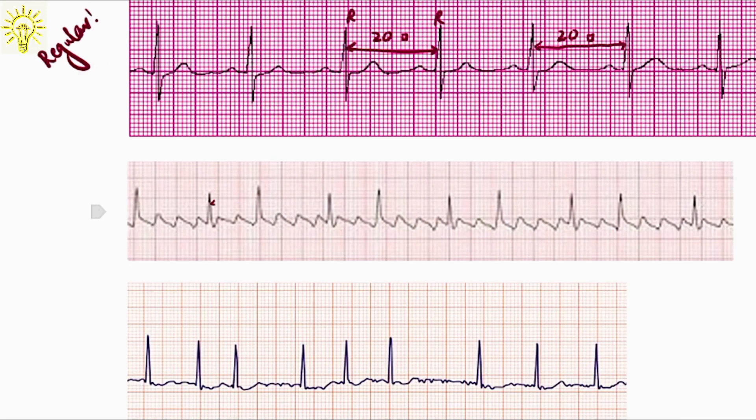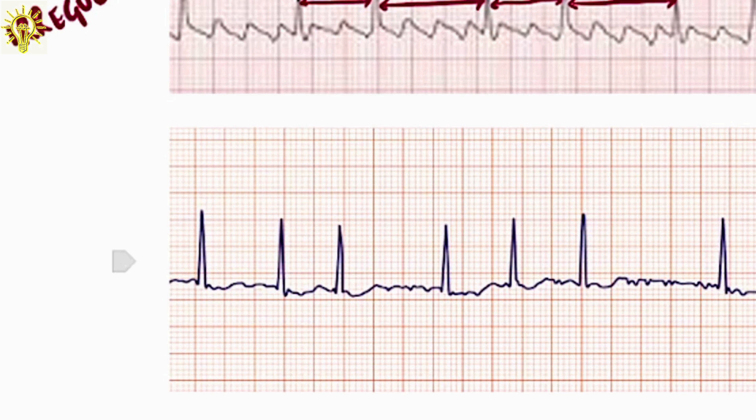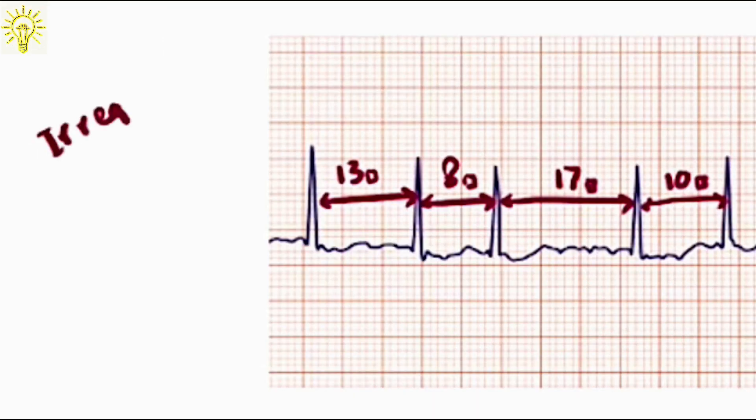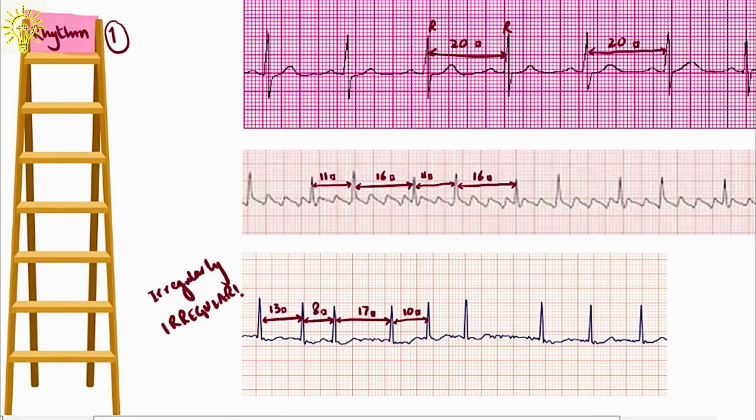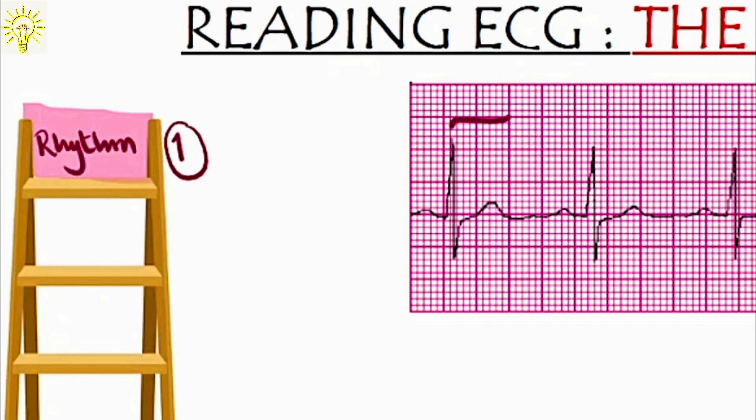In the second example, we have 11 small boxes between successive R waves followed by 16, followed again by 11, followed again further by 16. A regular pattern of irregularity, hence regularly irregular. In the third strip, every successive R wave interval is different with no pattern. So, we call it irregularly irregular. Note that the R wave is showing ventricular depolarization. For atrial side, we can do the same method for successive P waves.